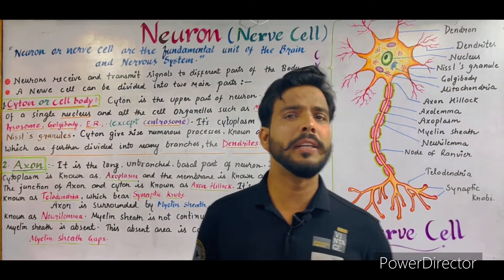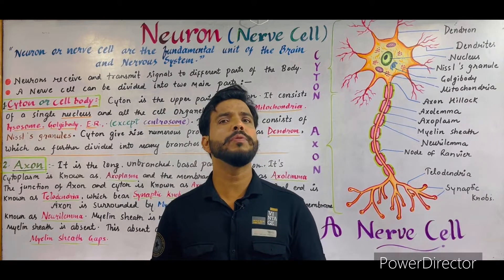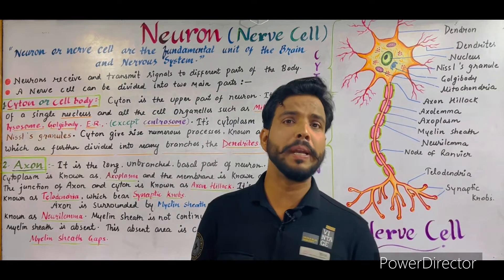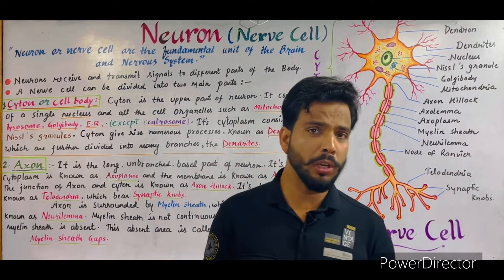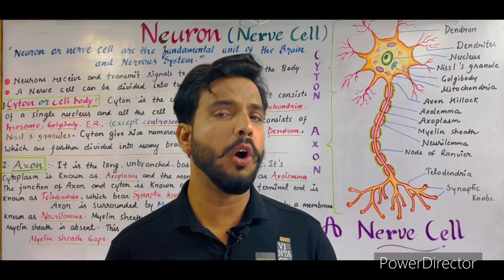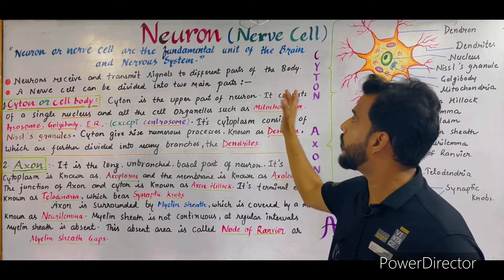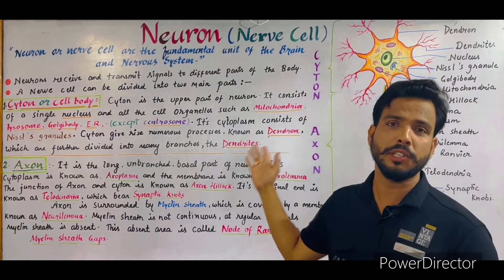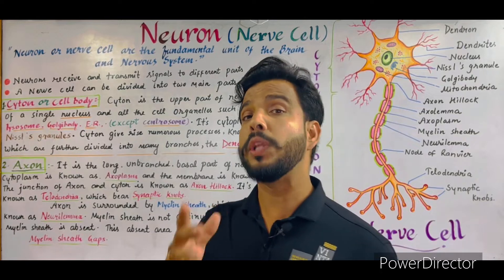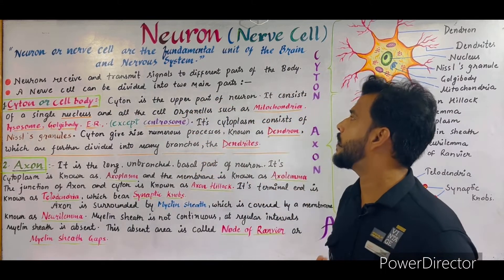First of all, it is very important to know what the neuron is. The neuron is actually the fundamental or basic unit of our brain and nervous system. Our brain consists of millions of cells which are known as nerve cells or neurons. Our brain and our nerves are made up of neurons. Hence you can say the neuron is the structural and functional unit of our brain and nervous system. With the help of neurons, nerve impulse takes place.